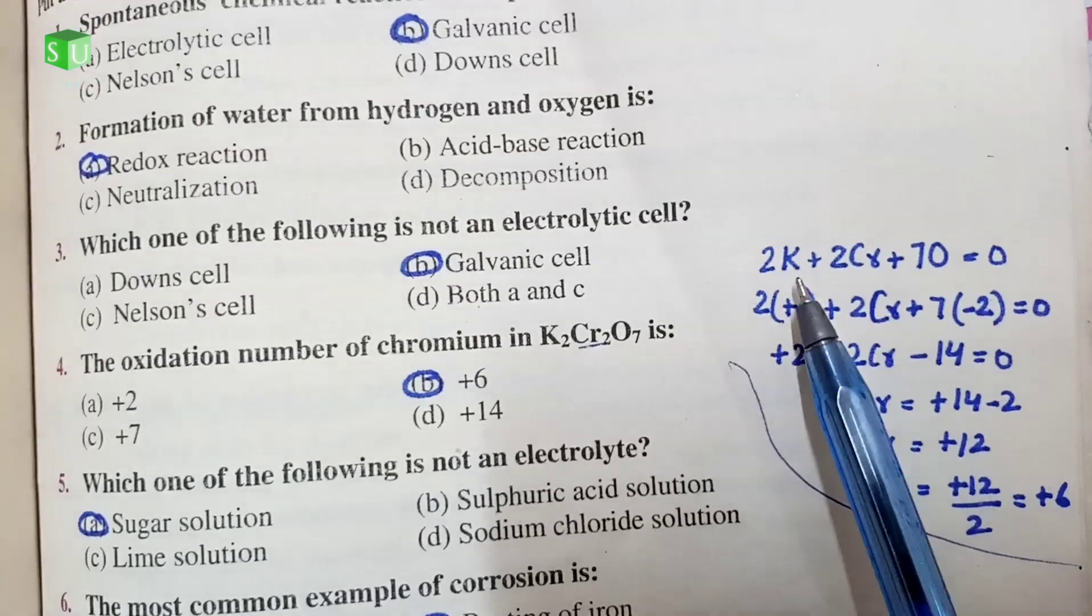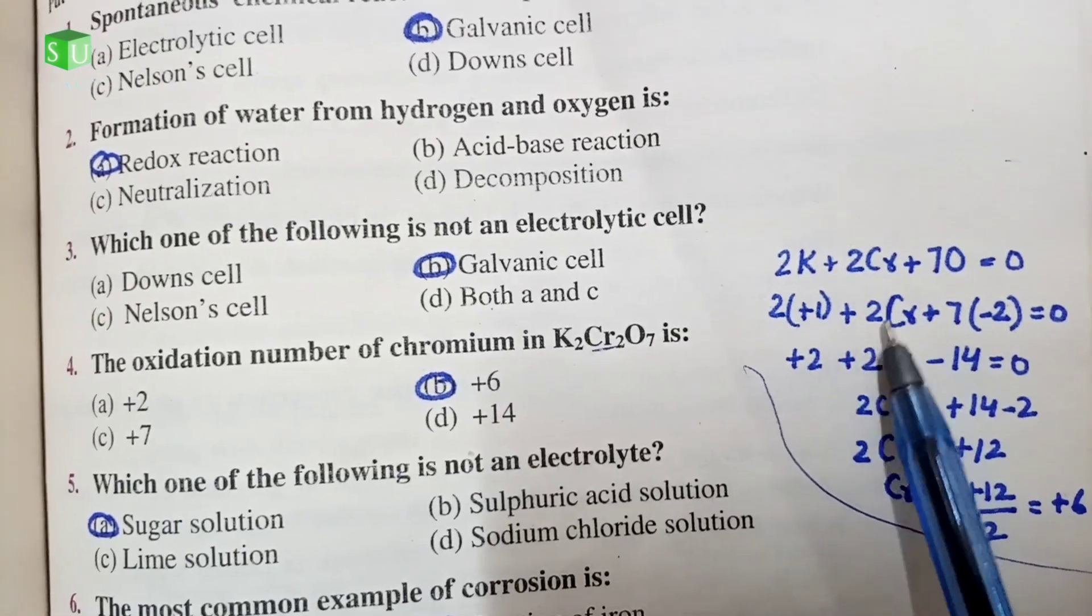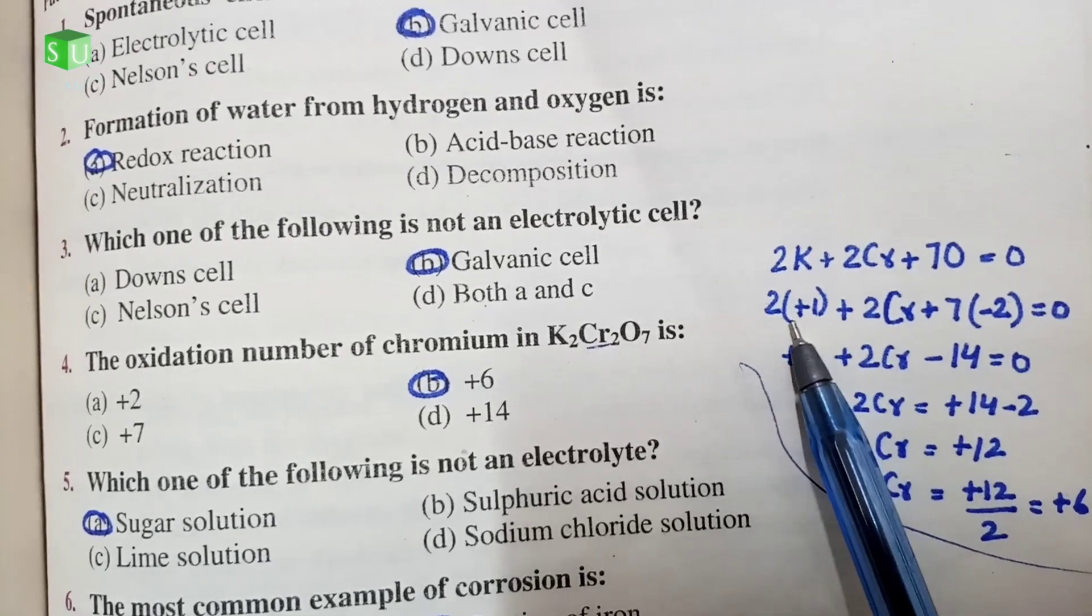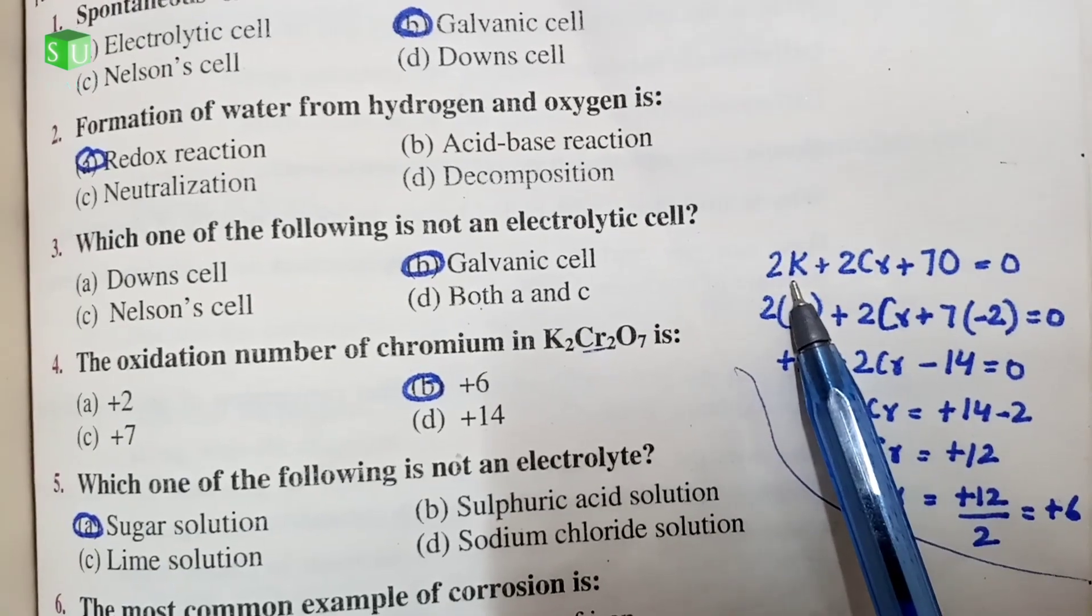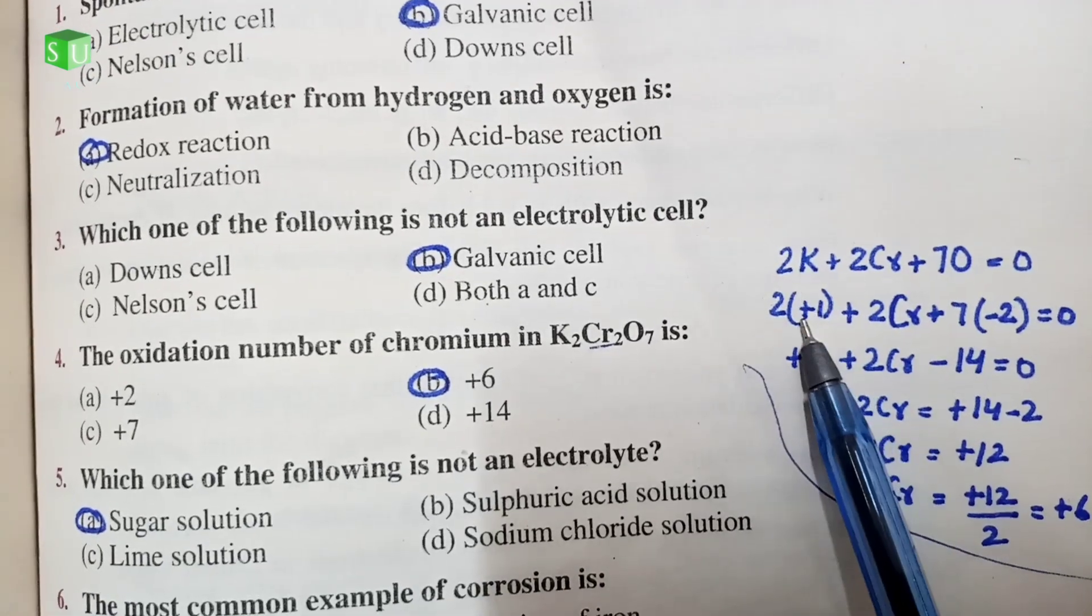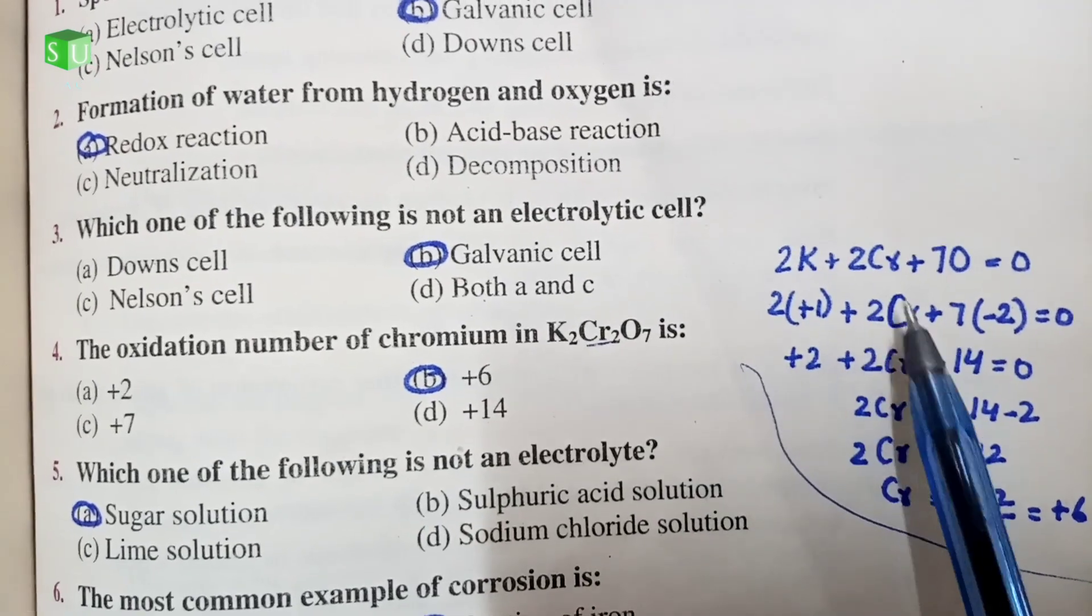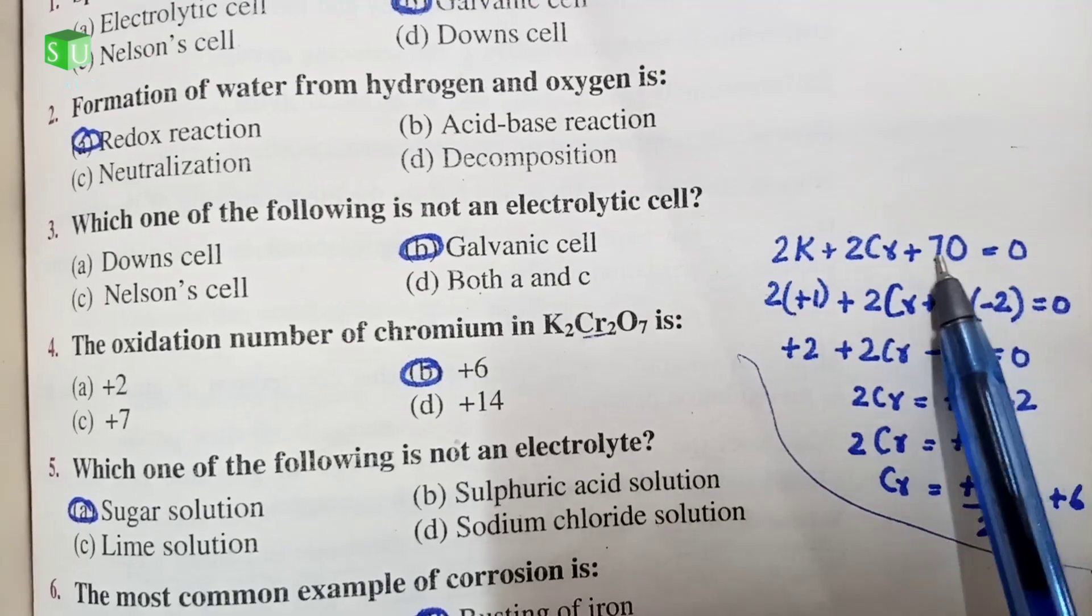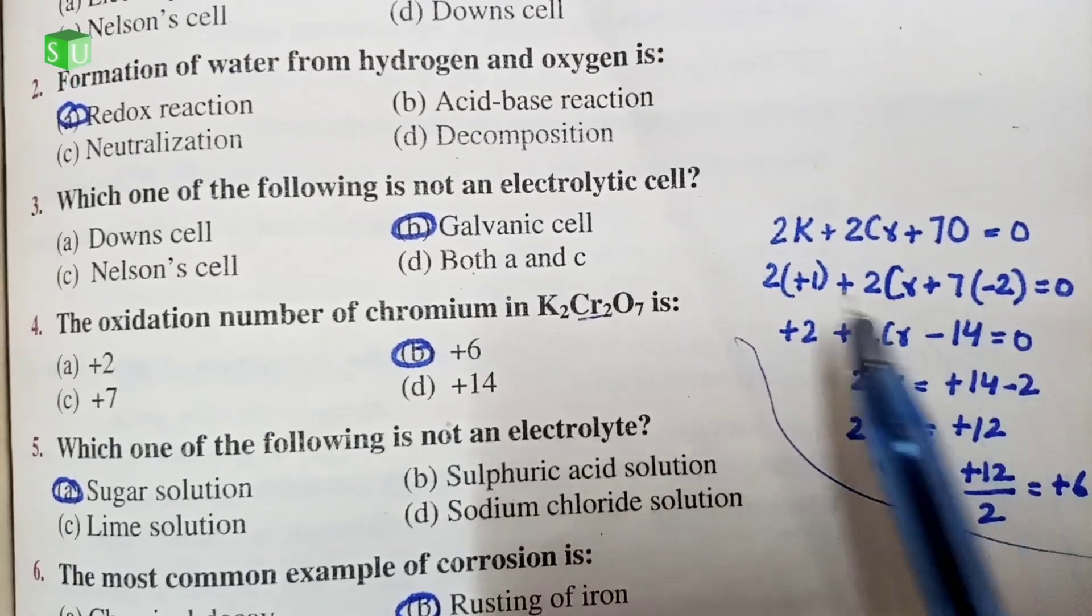Next step, you have to write the oxidation state. Potassium is the first group of elements, the oxidation state is +1. Oxygen oxidation state is -2.